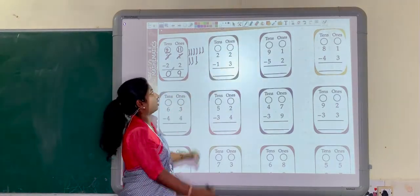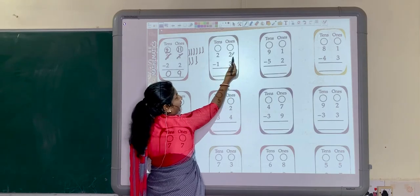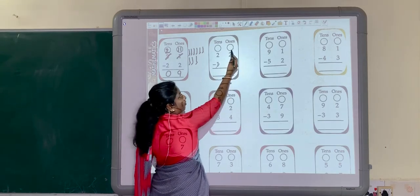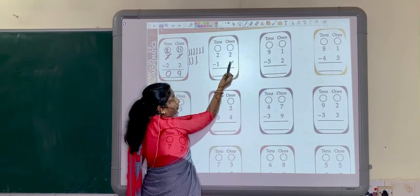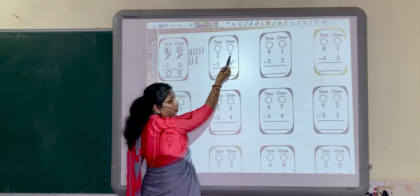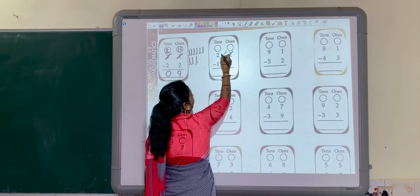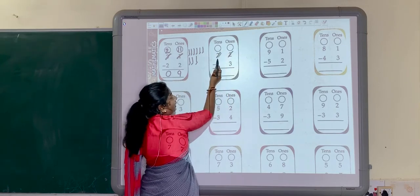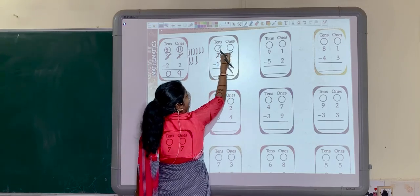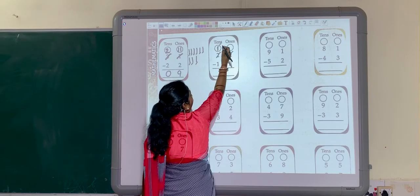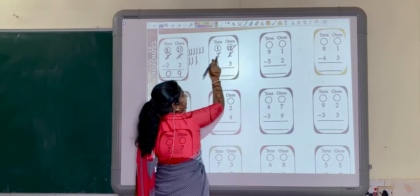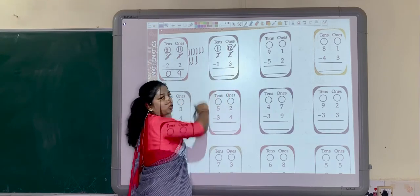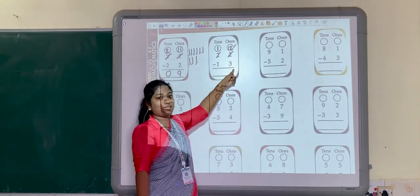Now, next one we will see, 22 minus 13. So, first we will solve 1's part. Here, we cannot subtract 3 from 2. So, we have to borrow again. If we cut these 2, we are taking 1 from 2. So, 1 will remain here. And here, these 2 as it is and 1 we have taken from here. So, 12. So, 12 minus 3.